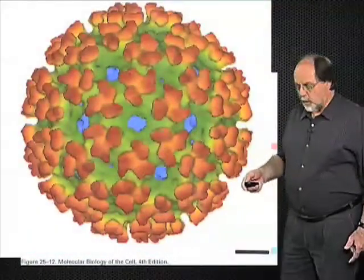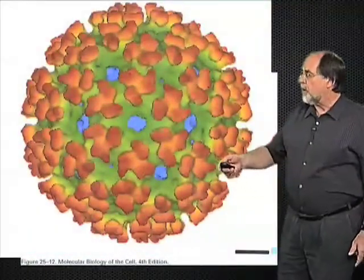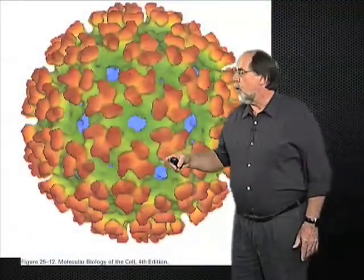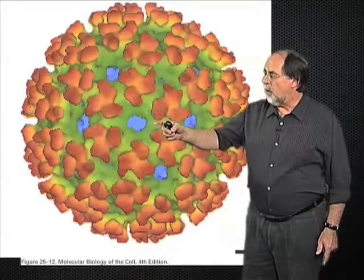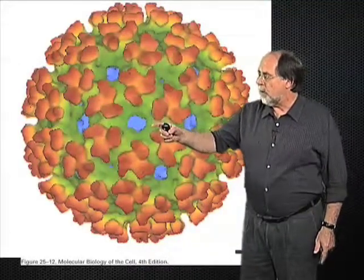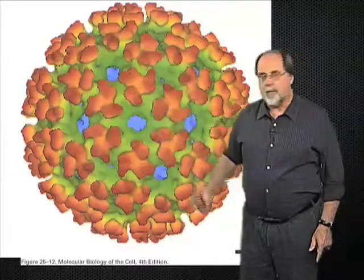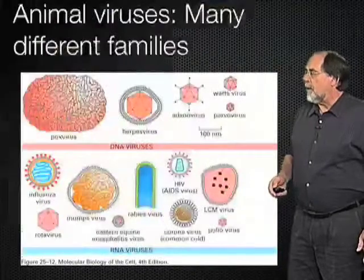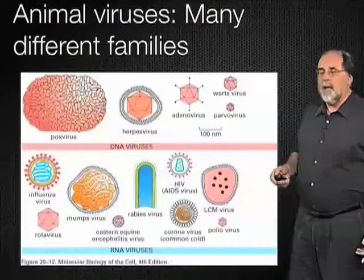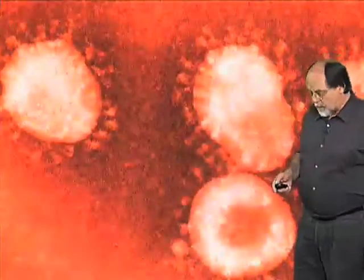This is an alphavirus, the Semliki Forest virus, which I will also talk about in a moment. It has almost all of its surface covered by spike glycoproteins — the envelope is only visible as blue spots in the background of this protein shell. Next is an electron micrograph of the SARS coronavirus; it is enveloped and has spike glycoproteins on its surface.